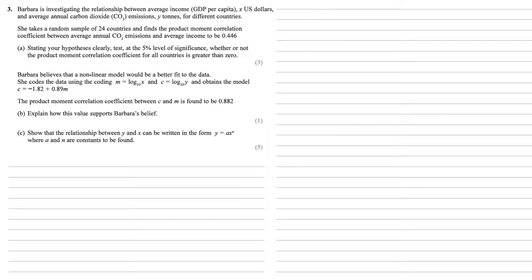Barbara believes that a non-linear model would be a better fit to the data. She codes the data using the coding m equals log base 10x and c equals log base 10y and obtains the model c equals minus 1.82 plus 0.89m.